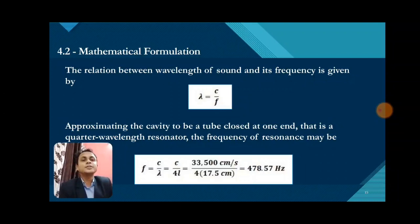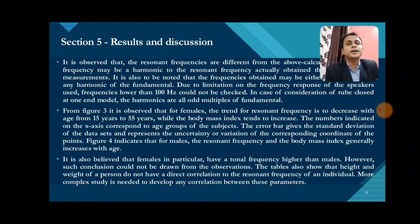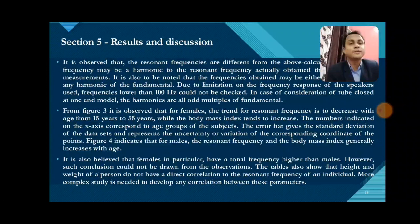These are the mathematical formulations. The relation between wavelength of sound and its frequency is given by λ = c/f. Approximating the cavity to be a tube closed at one end, it is a one-quarter wavelength resonator. The frequency is given by f = c/λ, where λ = 4L, with L being the length of the tube closed at one end. Approximating all the given values, we get a calculated resonant frequency of approximately 478.57 Hz. It is observed that the resonant frequencies measured differ from this calculated value because the observed frequency may be a harmonic of the resonant frequency. The frequencies obtained may be either the fundamental frequency or a harmonic of the fundamental.